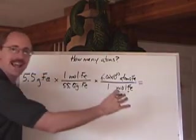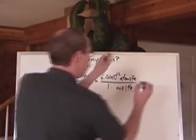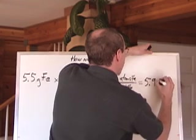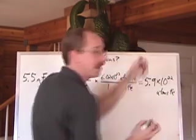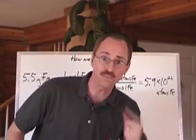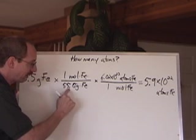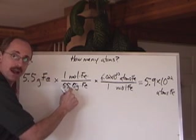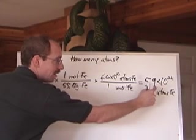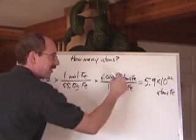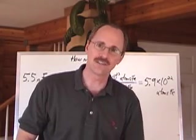All the units cancel and we're left with atoms of Fe. It's a two-stepper, but you can do it, and the answer's going to be 5.9 times 10 to the 22 atoms of Fe. Does that make sense? Of course it makes sense. If you have 5.5 grams of Fe, is that less than the mole? Yeah, because 1 mole weighs 55 grams. So this is less than 1 mole. Does that mean we're going to have less than 6.02 times 10 to the 23 atoms? Yeah, we've got 10 to the 22. It makes good sense.